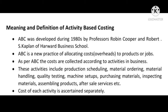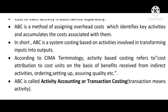material handling, quality testing, machine setups, purchasing materials, inspecting materials, assembling products, after-sales services, etc. The cost of each activity is ascertained separately. ABC is a method of assigning overhead costs which identifies key activities and accumulates the costs associated with them. In short, ABC is a system of costing based on activities involved in transforming inputs into outputs. According to CIMA terminology, activity-based costing refers to cost distribution to cost units on the basis of benefits received from indirect activities such as ordering, setting up, assuring quality, etc. ABC is also called activity accounting or transaction costing.